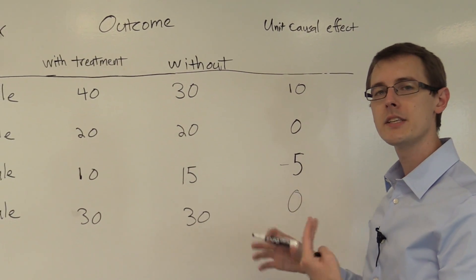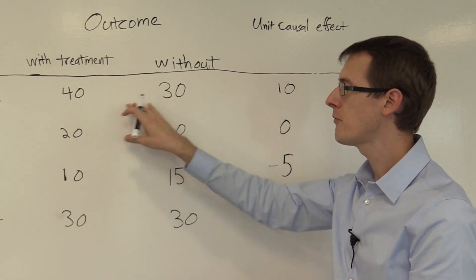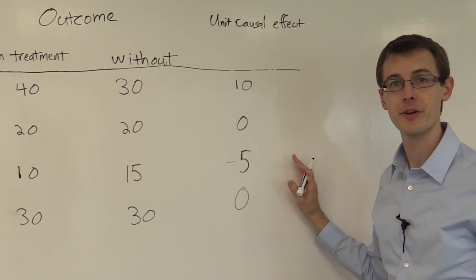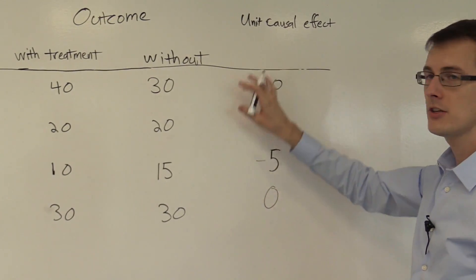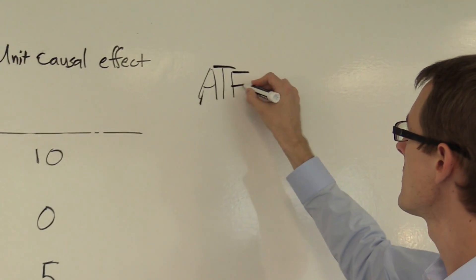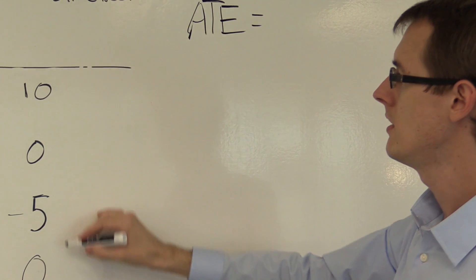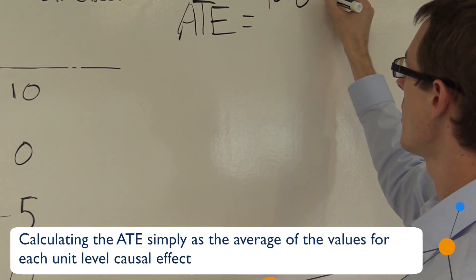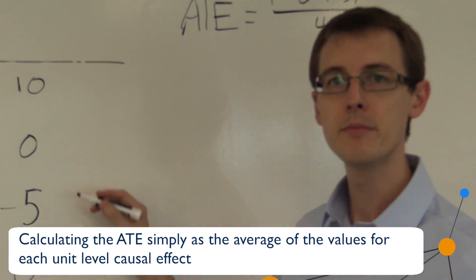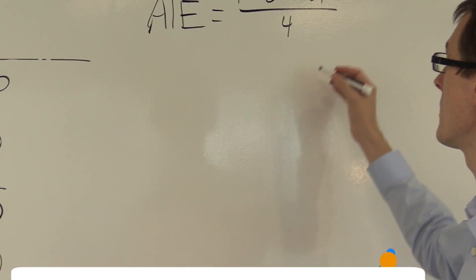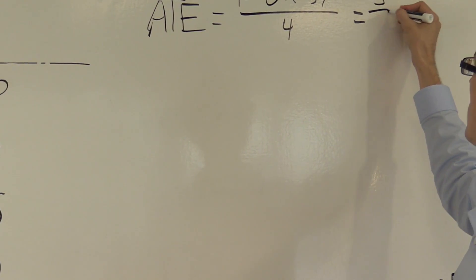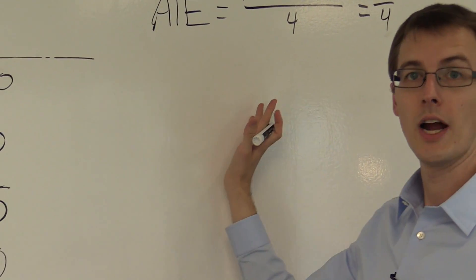We're going to try to figure out how we can learn about these things when data only shows us one of the numbers from these columns. But before we get to that, we want to understand the kinds of numbers we can learn if we observe both columns. The average treatment effect is just the average of all the unit causal effects. In this example, that's (10 + 0 + (−5) + 0) / 4, which equals 5/4.